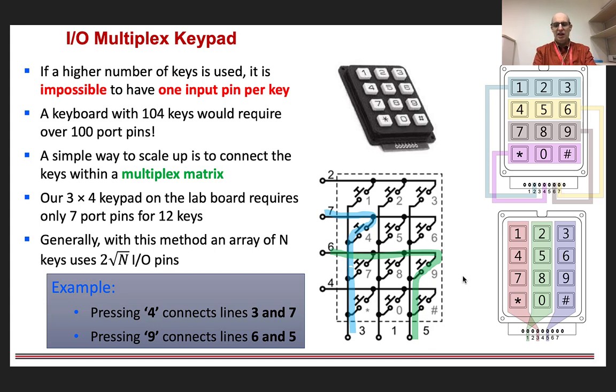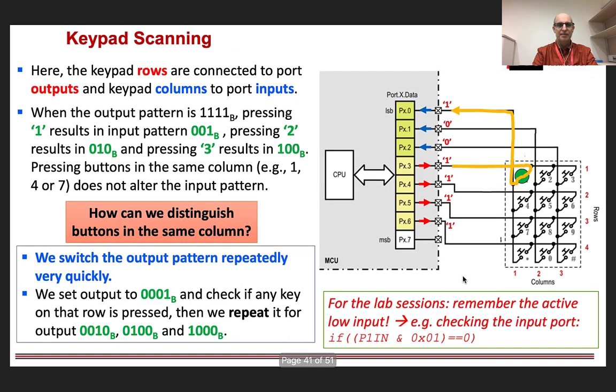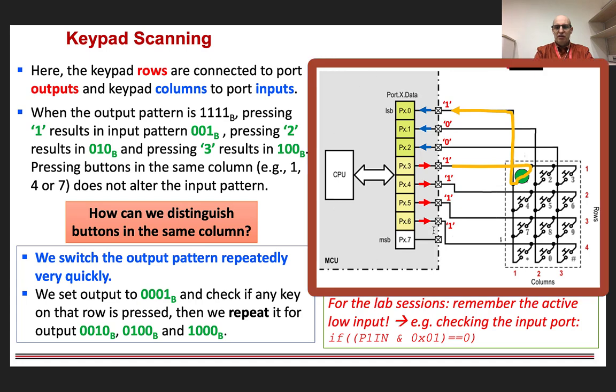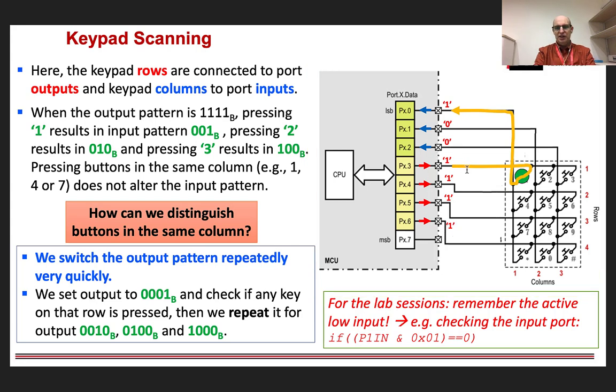And it's shown on the right-hand side, where we have our microcontroller just here, with a CPU connected to its GPIO port. We have one port here, and we're only using 7 pins in that port. 3 of those pins we've got connected as inputs. 4 of those pins we've got connected as outputs. And the output pins are connected to the rows of the keypad. The input pins are connected to the columns of the keypad.